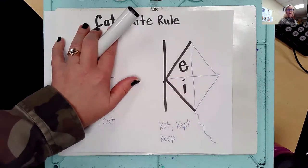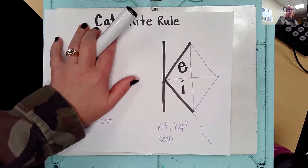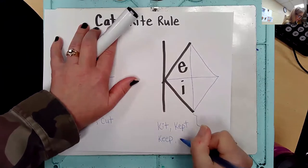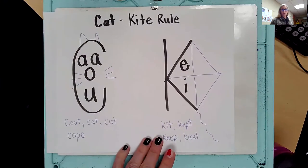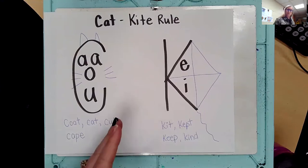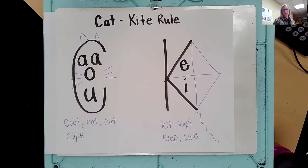How about 'kind' — K-I-N-D? 'You are very kind to me.' I hear I, so that means I'm going to use a K. All right, there's the cat kite rule. I hope you made one of these to have at home with you. So when you come to a word and you're not sure if we need to use a C or a K, you can refer to the cat kite rule. All right, first grade friends, enjoy the rest of your day. Bye!